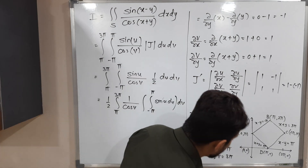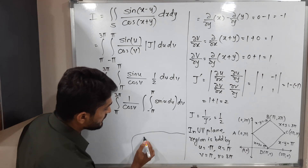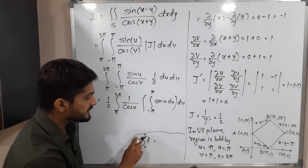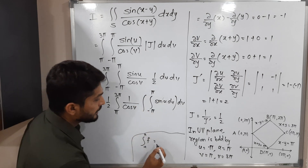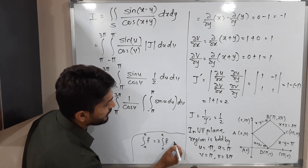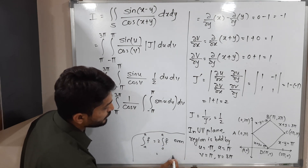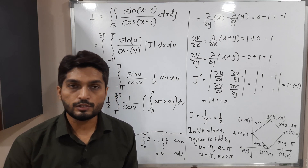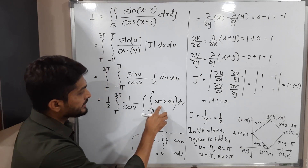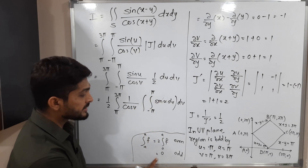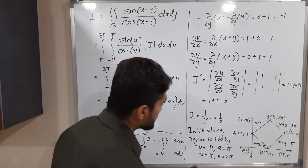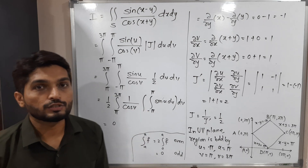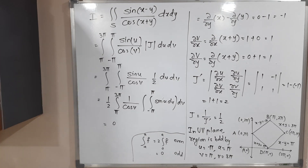We use the result that the integral from minus a to a of f(u) du equals zero if f is an odd function. Since sin(u) is an odd function and the limits are symmetric from minus pi to pi, the inner integral equals zero. Zero times anything is zero, so the value of the entire integral is zero. That is our final answer. Thank you.